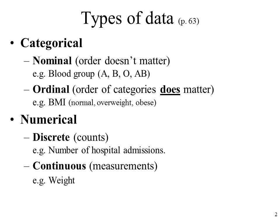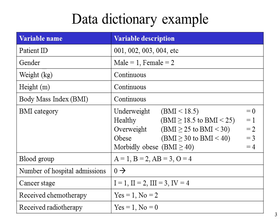There's also continuous data, which is measurements — for instance, weight. Here is a data dictionary example so the types of data make more sense.